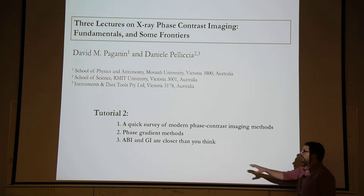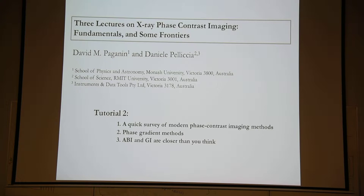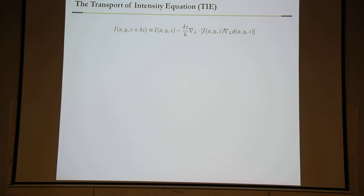Then I decided to add one more: scanning transmission X-ray microscopy and speckle scanning are closer than you think — I will discuss that quickly. So again, personal cross-section of phase-gradient imaging methods. Having worked with David for many years, it can't start other than with the transfer of intensity equation. David derived that equation and approximated it in the case of a single material; in that case you can solve it exactly.